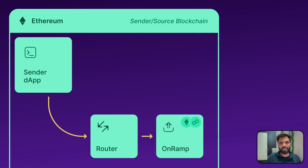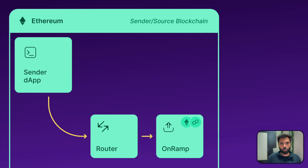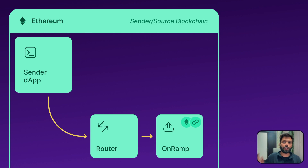Each lane has its own on-ramp. Ethereum-Polygon will have their own specific smart contract, Ethereum-Avalanche will have their own, Ethereum-Optimism will have their own, and so on. If the query contains tokens as well, the application, user, or smart contract on the sender side would have to approve those tokens with the router contract on the sender side.